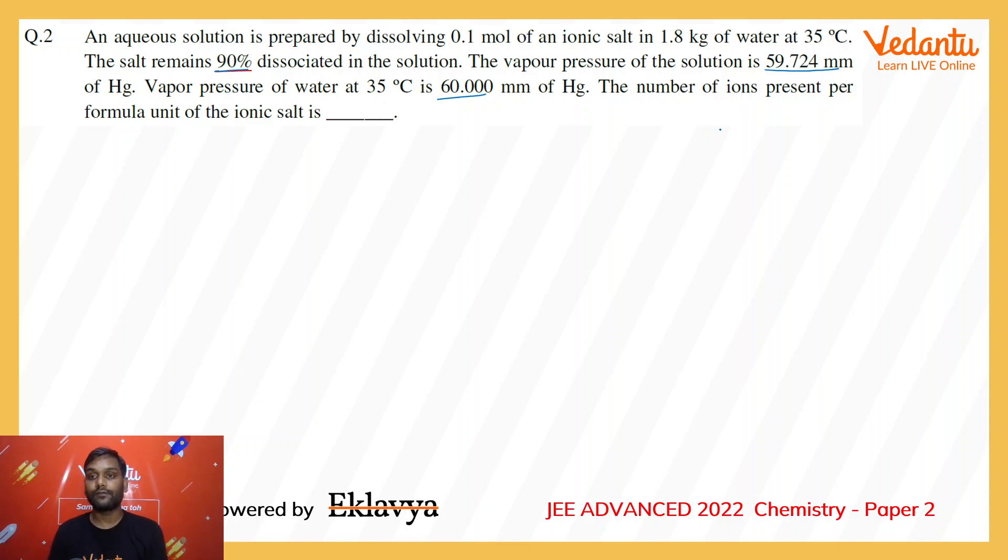On dissolving 0.1 mole of the ionic salt in 1.8 kg of water, the lowering in the vapor pressure is from 60 to 59.724. Using this, I will be able to calculate the van't Hoff factor of the salt. Let us first find that.